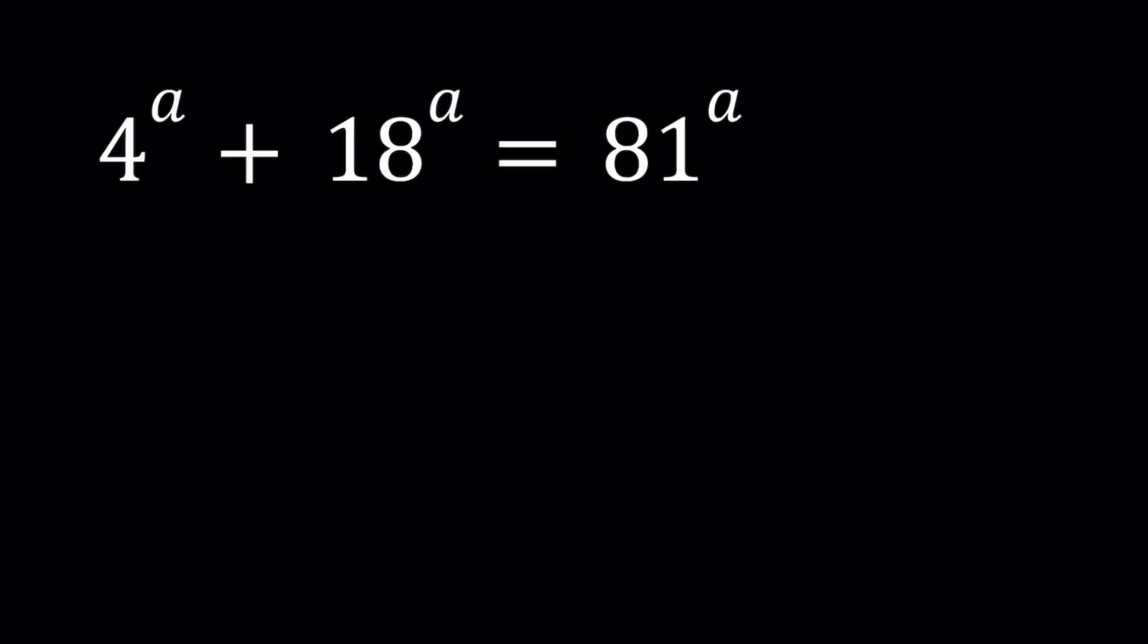We've done similar problems before and I could probably call this a golden exponential equation for certain reasons you're going to see in a bit. Now I have 81 to the power a on the right hand side and that seems to be the highest base. Let's go ahead and divide everything by that. This is going to turn into a nice equation. And best of all, we're going to get 1 on the right hand side.